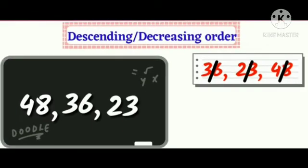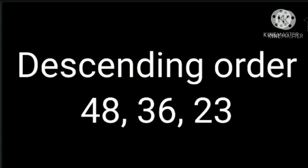Now cross out the last number left and write it at the end. That is the descending order of the numbers. We can write it in descending order like this: 48, 36, and 23.